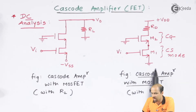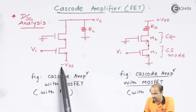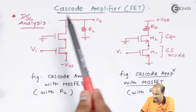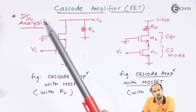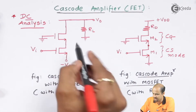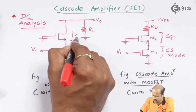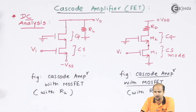Instead of ground, we can have another source at the source side, called minus VSS. And instead of a direct supply at the top, I can connect the output with load resistance RL using plus VDD. With this configuration as well, this is a CSCG configuration. If I add particular resistances, there will be no significant change in the output voltage.